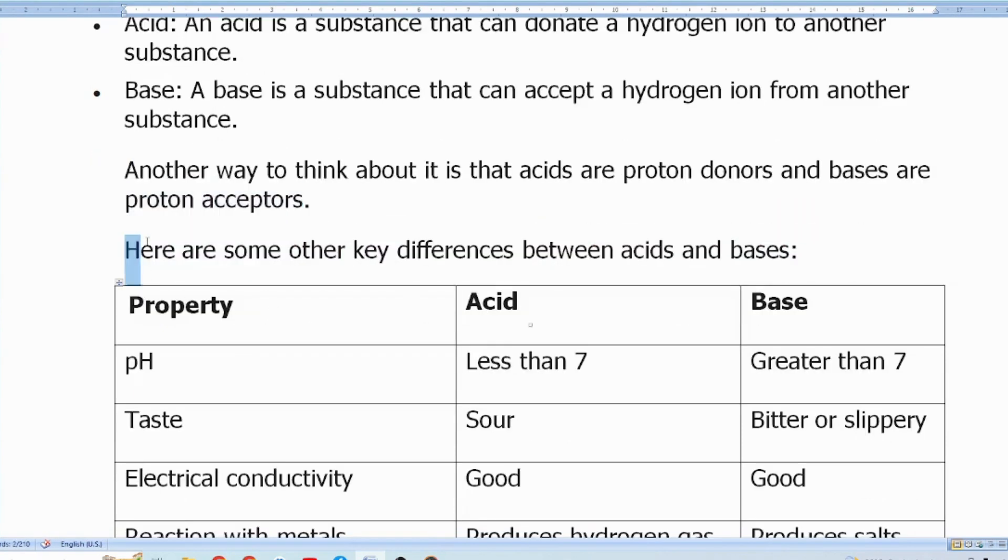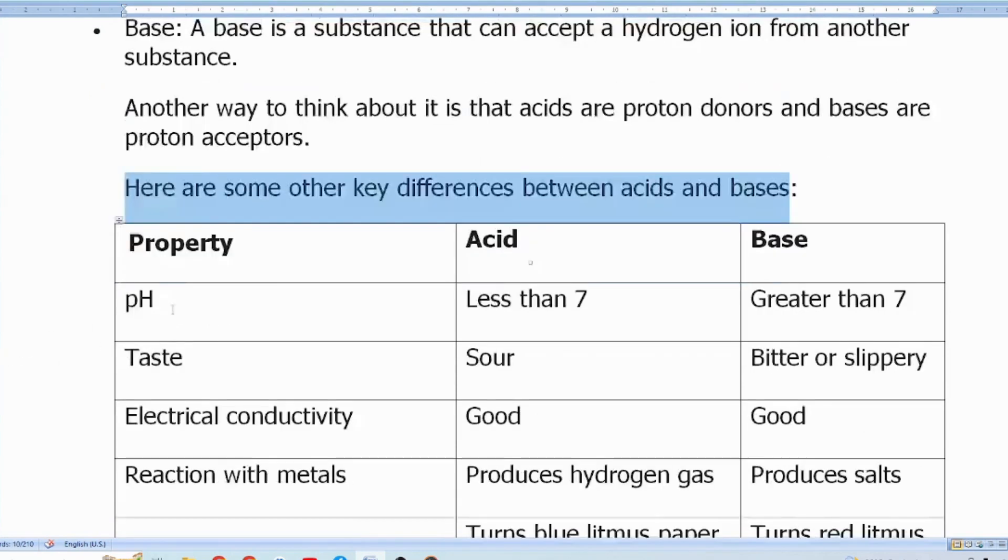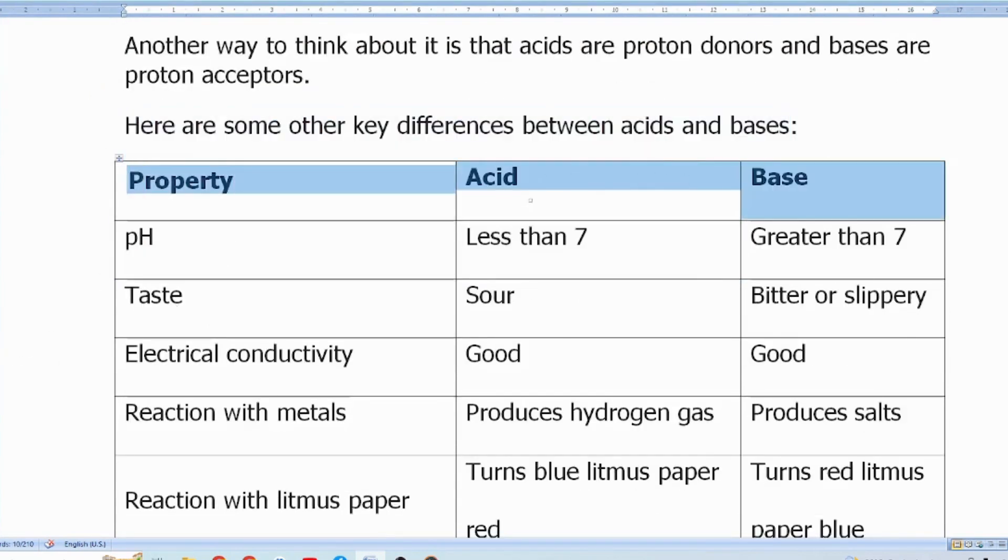Here are some other key differences between acids and bases. Property, acid, base, pH. Less than 7, greater than 7.